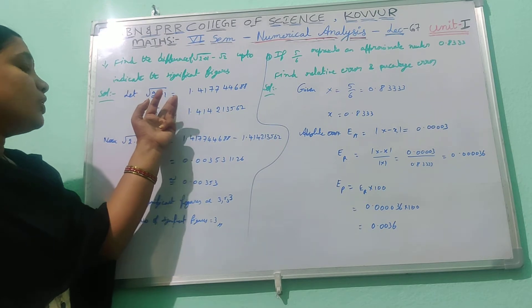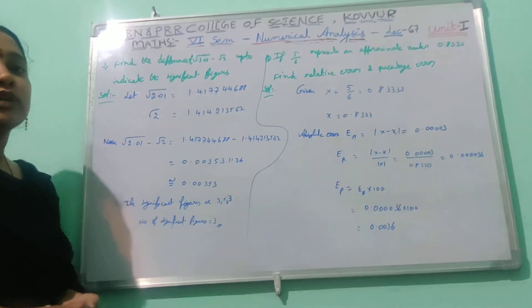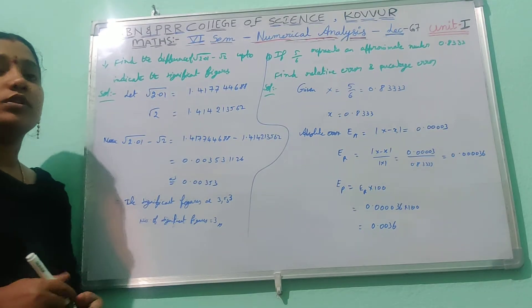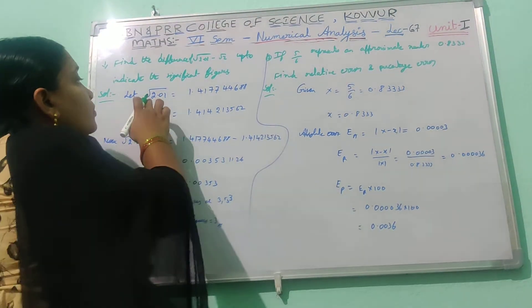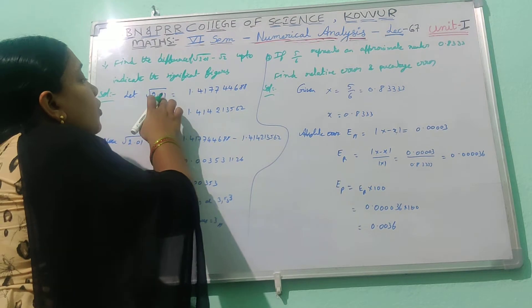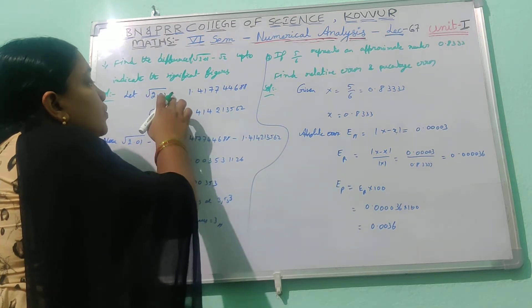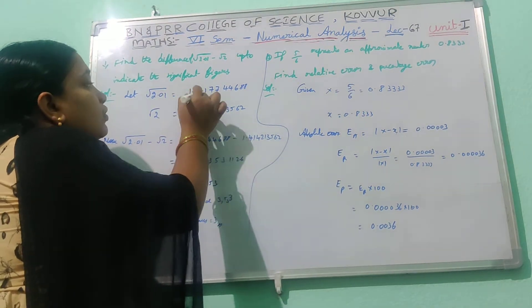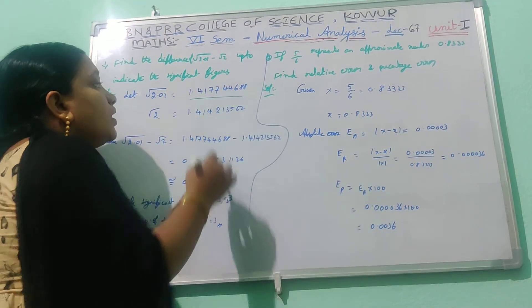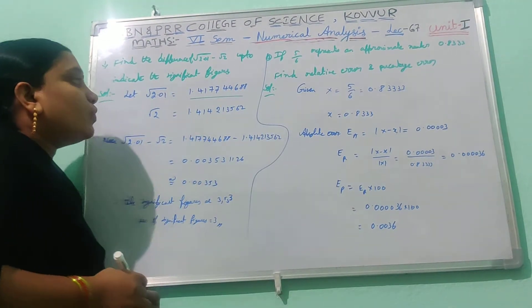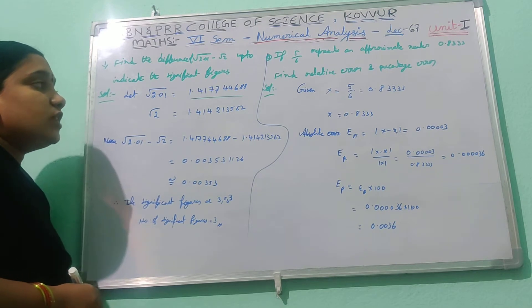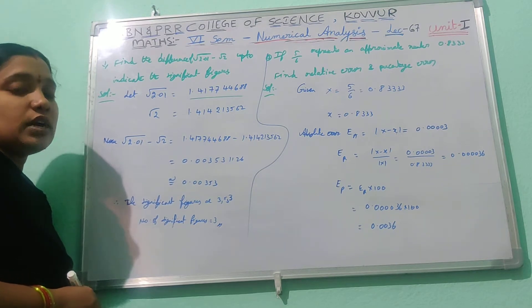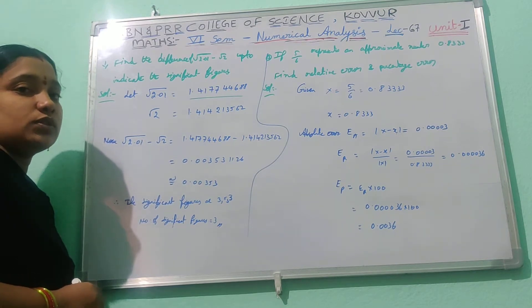Root of 2.01 — using a scientific calculator — that equals the value 1.41417744688.